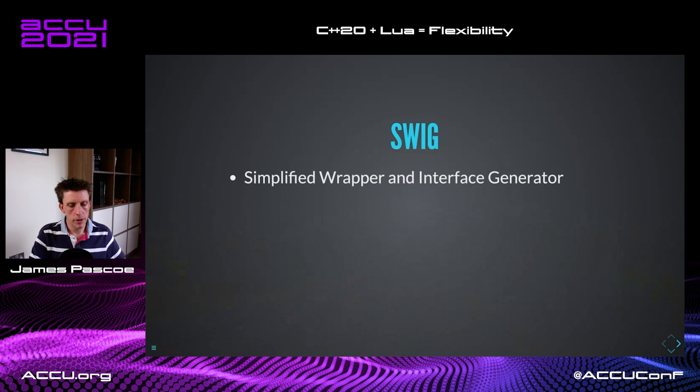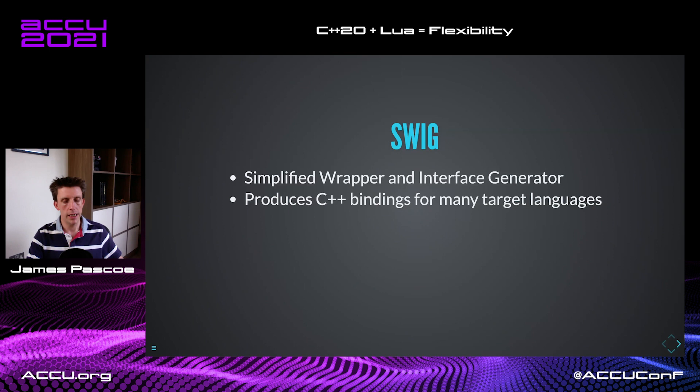SWIG stands for Simplified Wrapper and Interface Generator. It produces C++ bindings for many target languages — it scans your C++ source and produces bindings. It generates Lua stack calls for standard C++ types automatically, so you don't have to worry about std::string, std::vector, std::map, etc. The C++ support in SWIG is very good, supporting C++17 well, and we're using it in production systems.